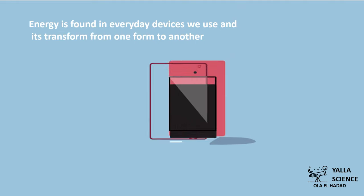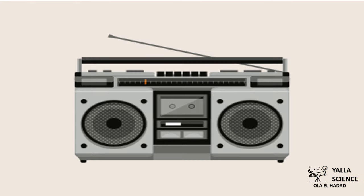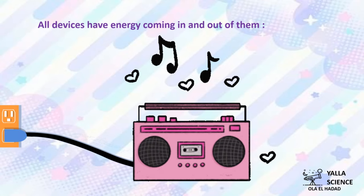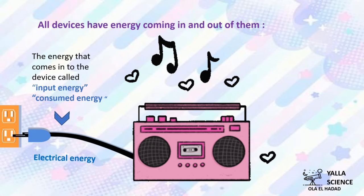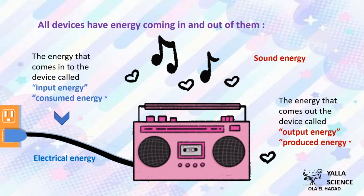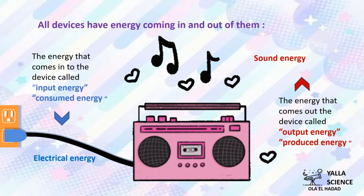All devices have energy coming in and out of them. Any device uses a kind of energy called input energy and produces another kind of energy called output energy. The input energy is the energy that comes into the device and makes it work. Electrical energy is the most common input energy in all electrical devices. The output energy is the energy that comes out or is produced from the device.